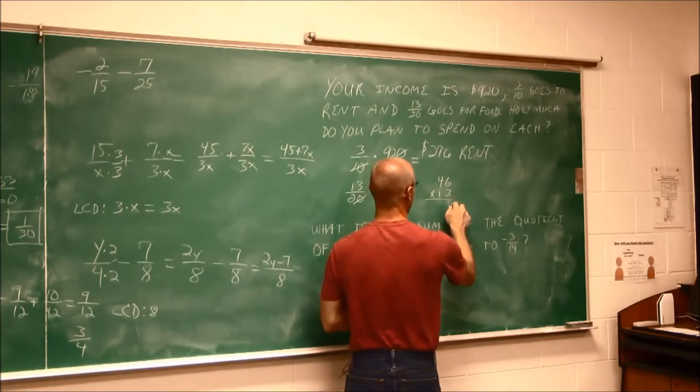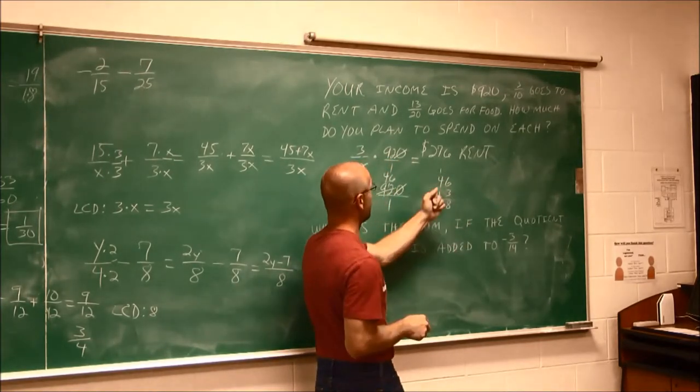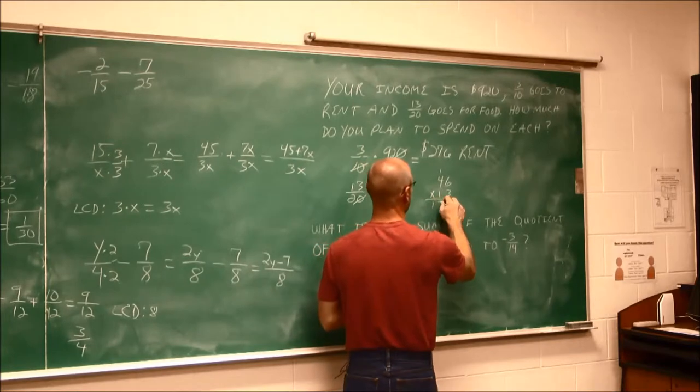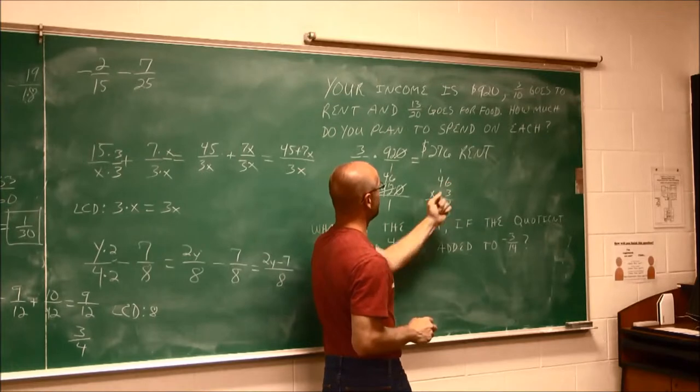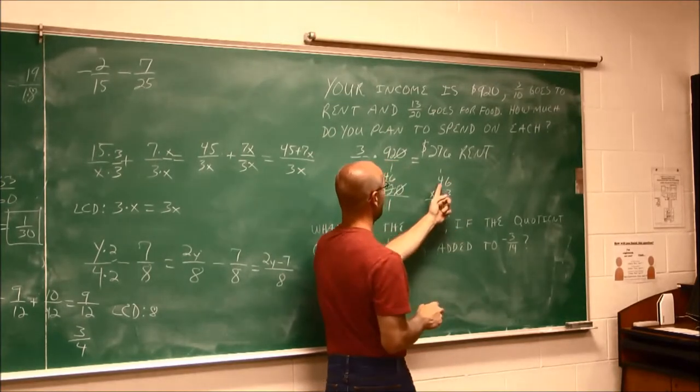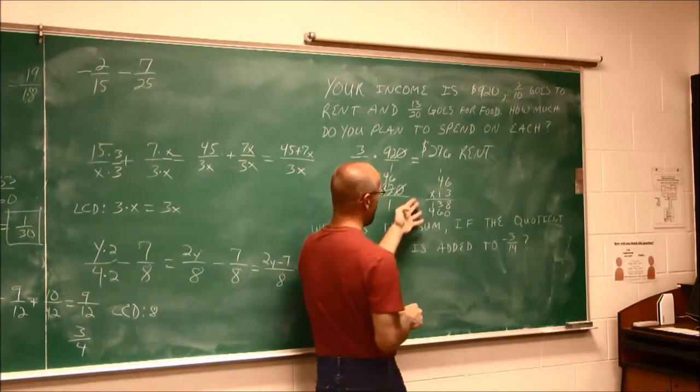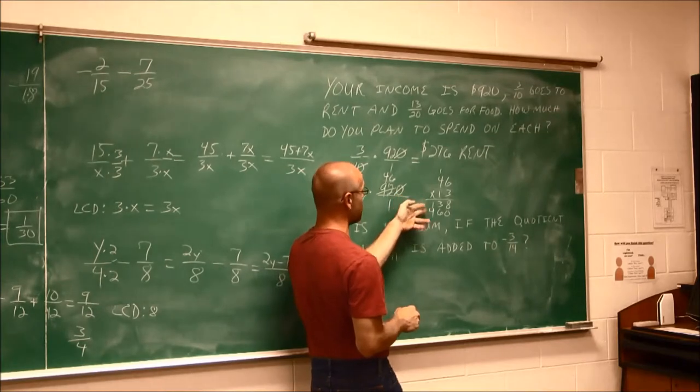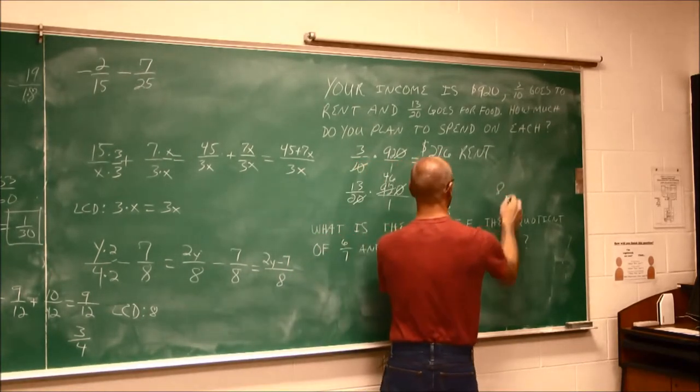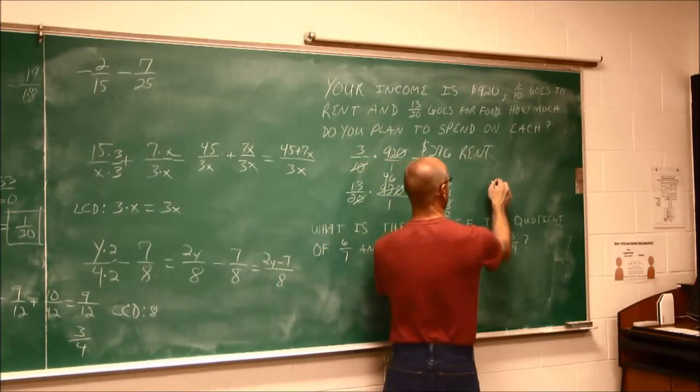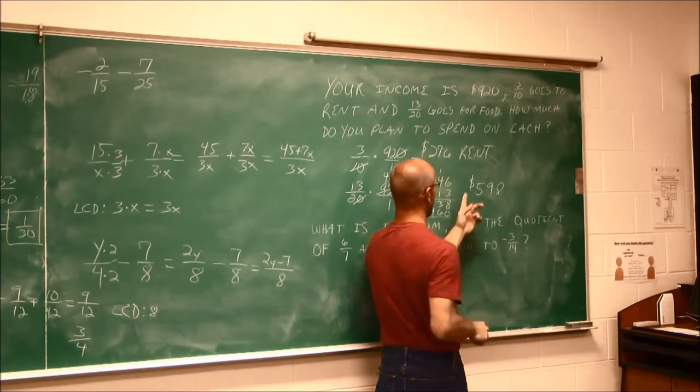3 times 6 is 18, carry the 1. 3 times 4 is 12, plus the 1 is 13. And then we're in the tens place. So I'm going to have my placeholder. 1 times 6 is 6. 1 times 4 is 4. And now I'm going to add my partial products. Remember partial products? And if I add those, I get 8, and 6 and 3 is 9, 4 and 1 is 5. And our units are dollars.